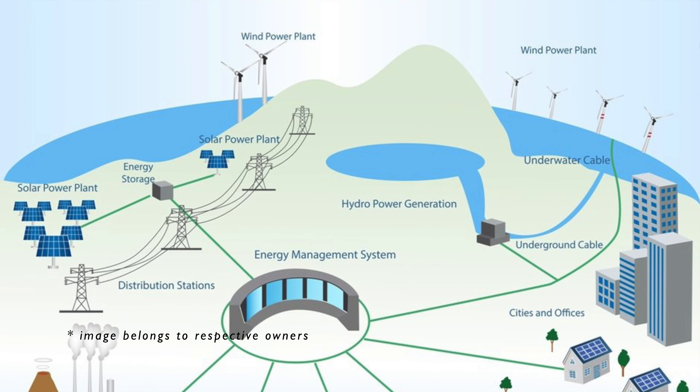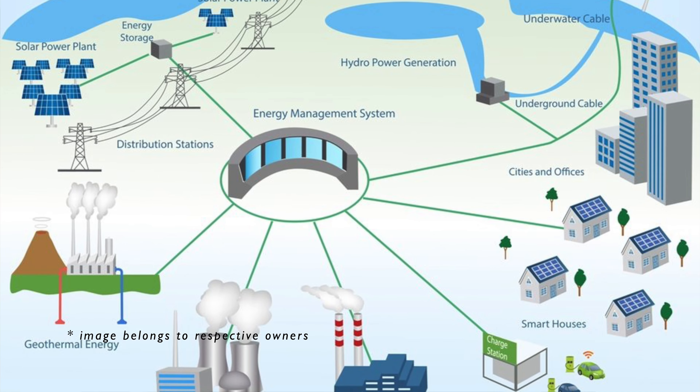Consider a microgrid connected to the power grid — decisions need to be made about where to source power from. This depends on factors such as the availability of localized power generation sources. Since renewable energy is intermittent, it's possible that local sources are not generating sufficient energy. In such cases, the microgrid controller needs to decide where to source power from, so as to maintain uninterrupted power supply to the loads.